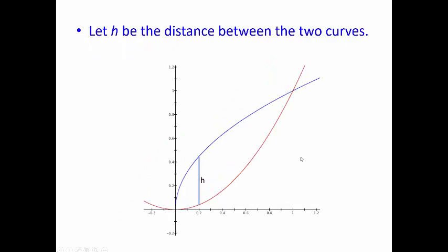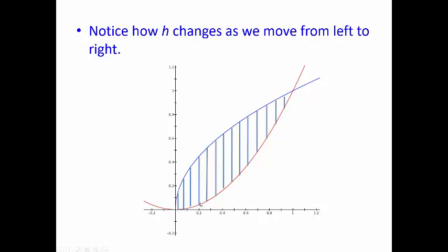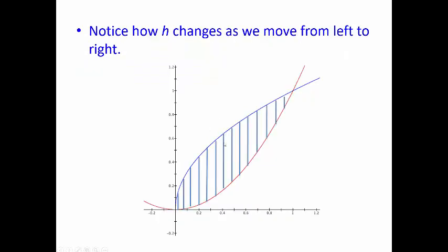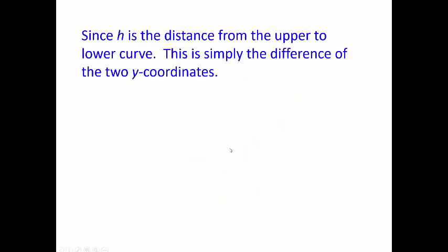We're going to start by letting h be the distance between the two curves. This value of h is determined by the top curve and the bottom curve. If you look at all these different lines between the curves, h is different depending on where you are — the height changes as we move left to right. Here the height is pretty large, and over here the height is shorter. Since h is the distance from the upper to lower curve, to find that height you simply subtract the two y-coordinates.